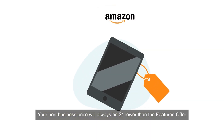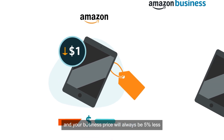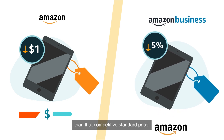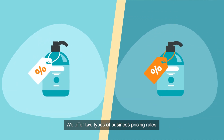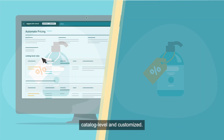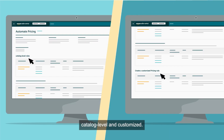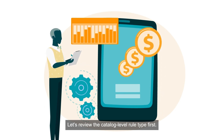Your non-business price will always be a dollar lower than the featured offer, and your business price will always be 5% less than that competitive standard price. We offer two types of business pricing rules: catalog level and customized. Let's review the catalog level rule type first.